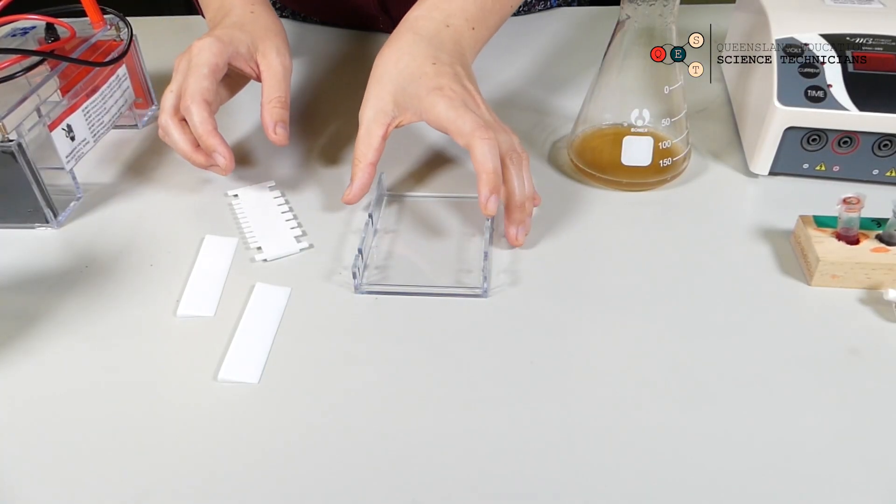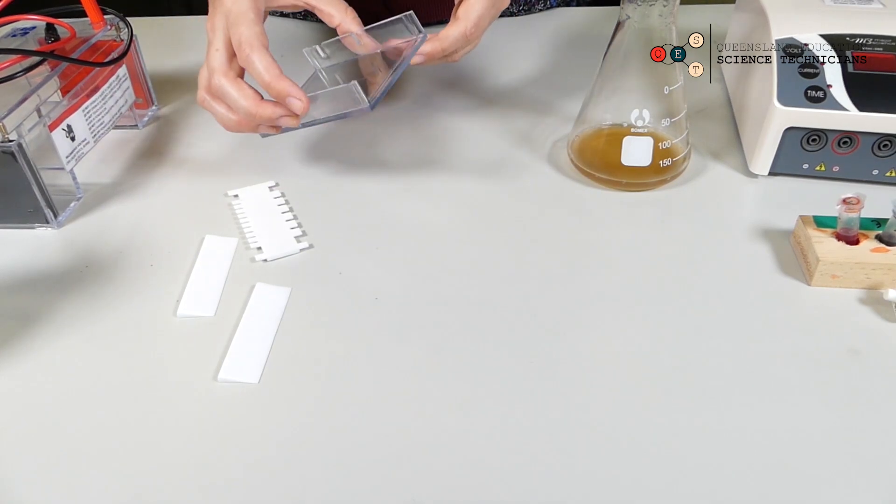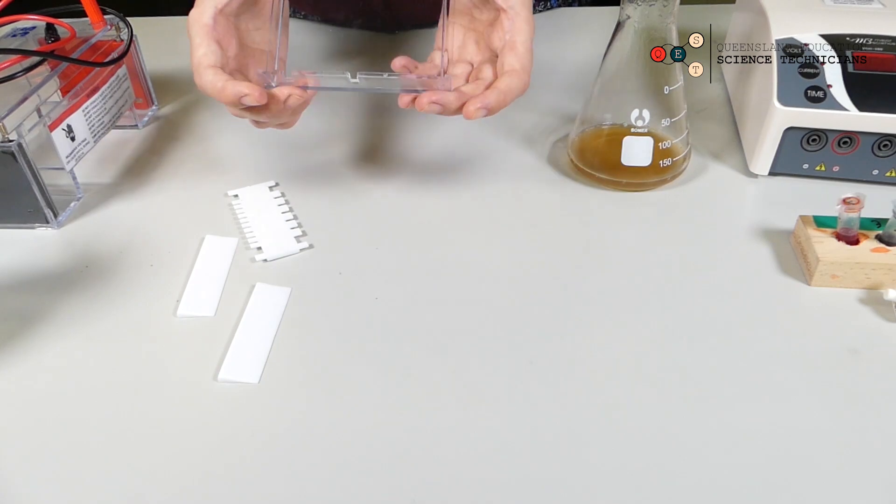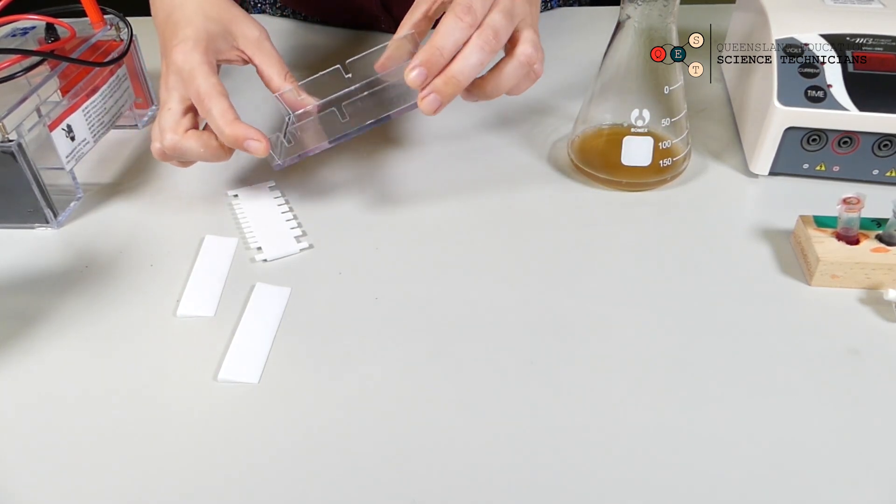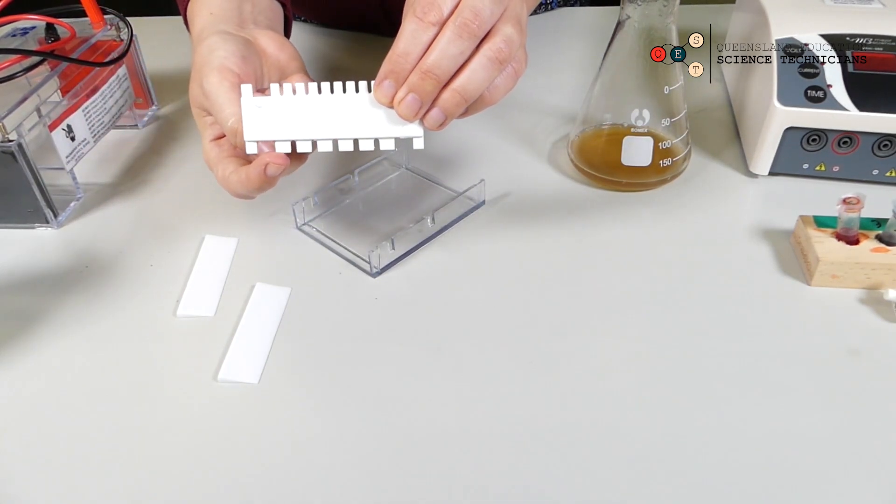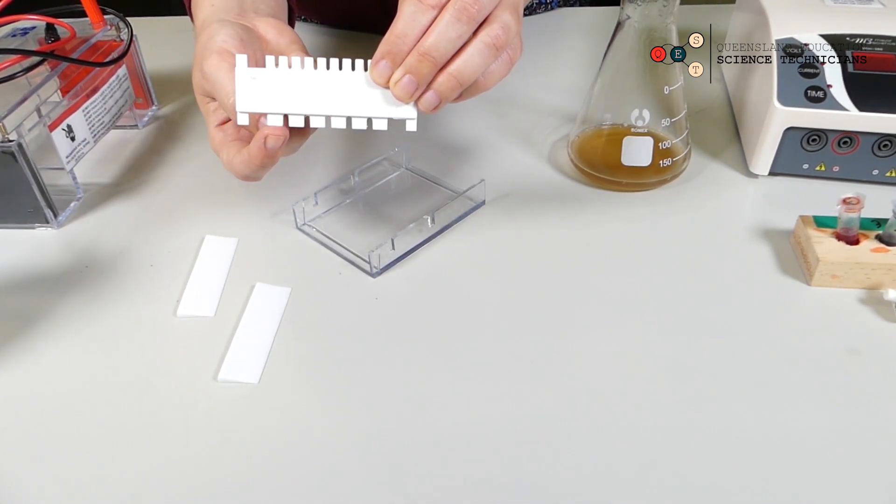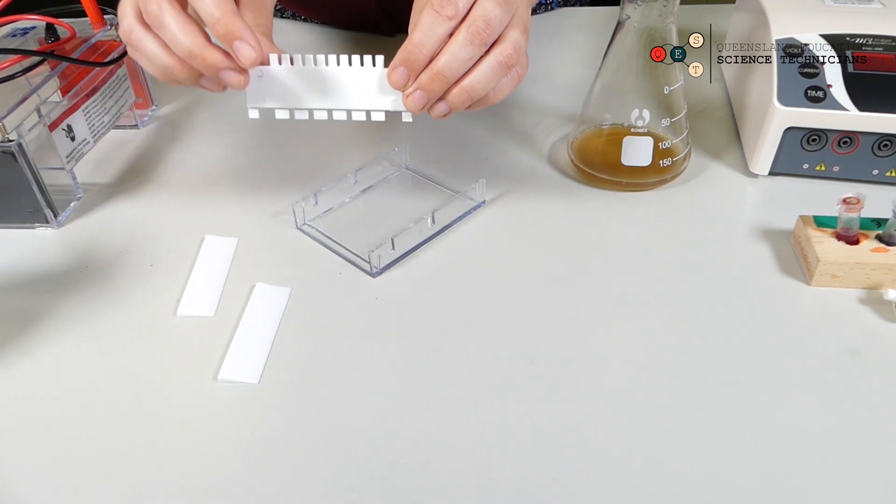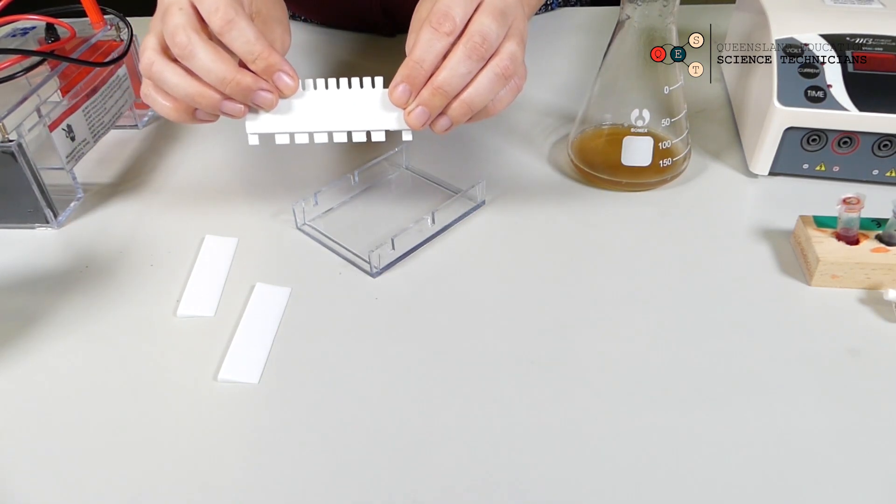So the first thing to do when setting up for some gel electrophoresis is we need to make our gels. We get this form and this comb. You can see the comb has teeth, and these teeth are what we use to make the indents in the gel that we pipette the food dye into.